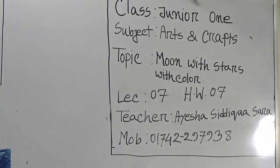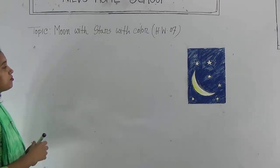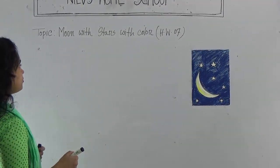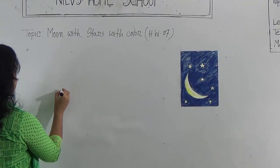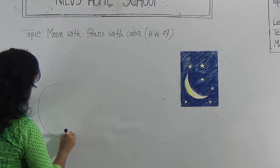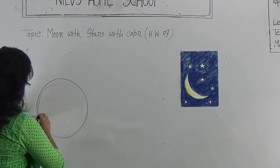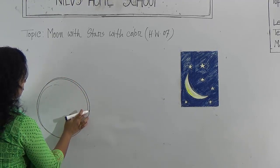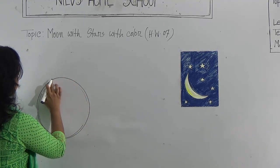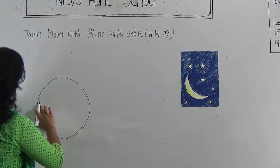Dear student, look at the board and draw with me. This is a very easy topic. You know that first you draw a circle, okay, because the moon is like a circle.